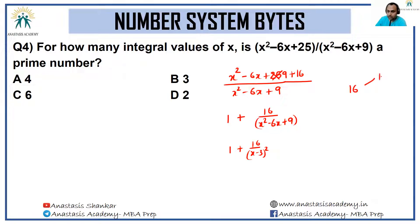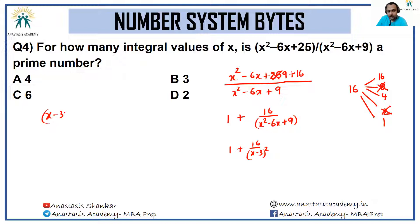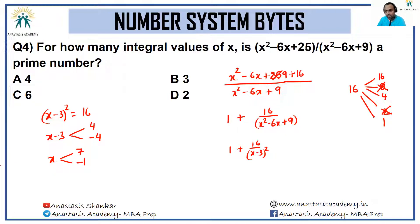The factors of 16 are 16, 8, 4, 2, and 1. Among these, we only care for those that are perfect squares — since 16 is being divided by (x − 3)². Starting with (x − 3)² = 16: x − 3 = 4 or x − 3 = −4, giving x = 7 or x = −1.